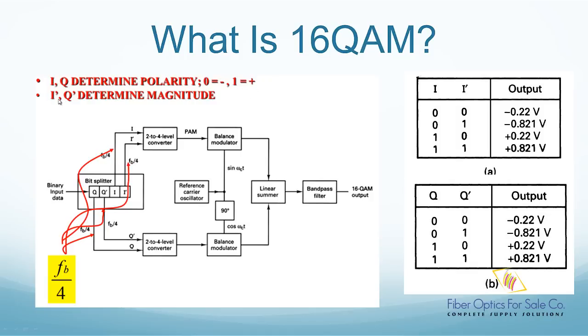The I apostrophe and Q apostrophe bits control the carrier waves amplitude. If the bit is 0, then the amplitude is 0.22 volts. If the bit is 1, then the amplitude is 0.821 volts.